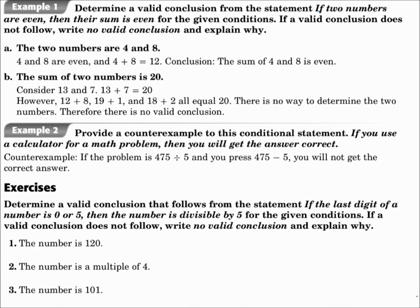Part B: the sum of two numbers is twenty. That doesn't flow because the original statement says if two numbers are even, I should be given two even numbers. But instead, I'm told that the sum is twenty. Also notice, if the sum is twenty, I could have two even numbers or two odd numbers — there's no way to know. So because this situation is out of order, there's no valid conclusion.